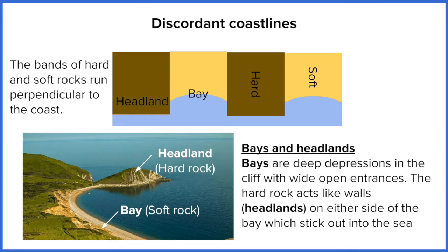In contrast, discordant coastlines have bands of rock running perpendicular — at right angles to the sea. Both hard and soft rock are exposed in equal distribution to the sea. The harder rock doesn't erode as quickly, but the softer rock does, creating an undulating pattern of land that sticks out into the sea and land eroded back by the sea. The land that sticks out is called a headland — that's the more resistant, harder rock. The bay is the softer rock that's been eroded away. This is typically what you see at the seaside, with bits of rock jutting out on either side. It differs from a cove because it's more exposed, with a very wide open entrance to the bay.